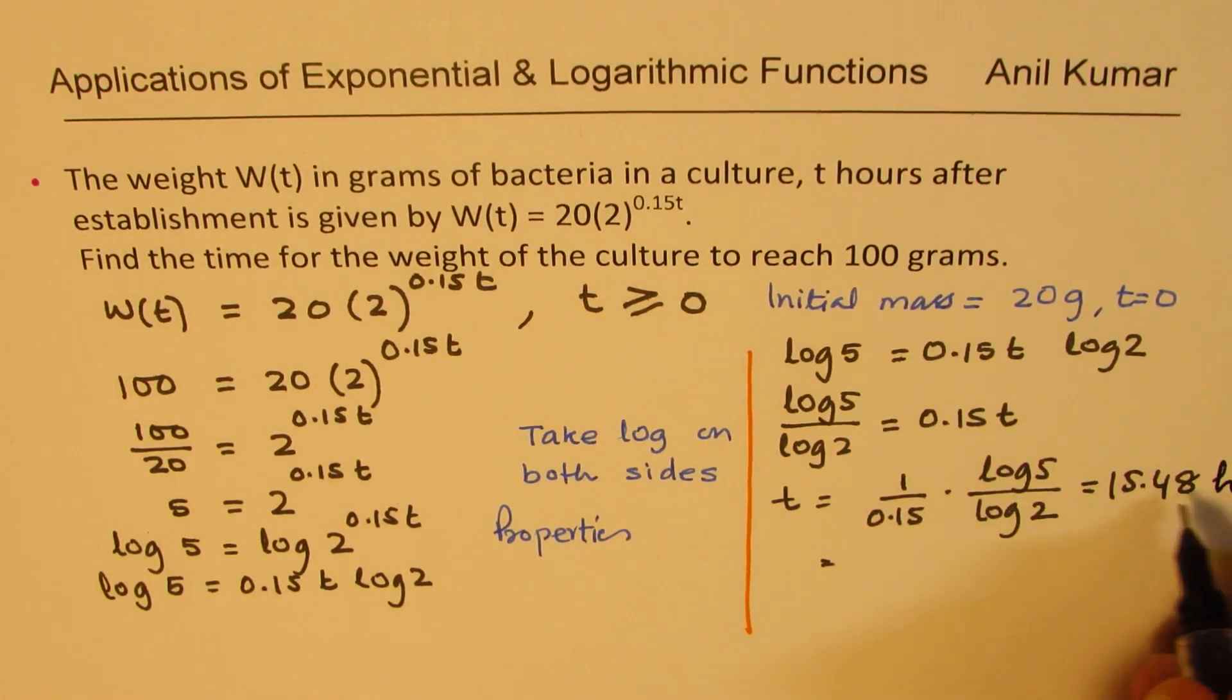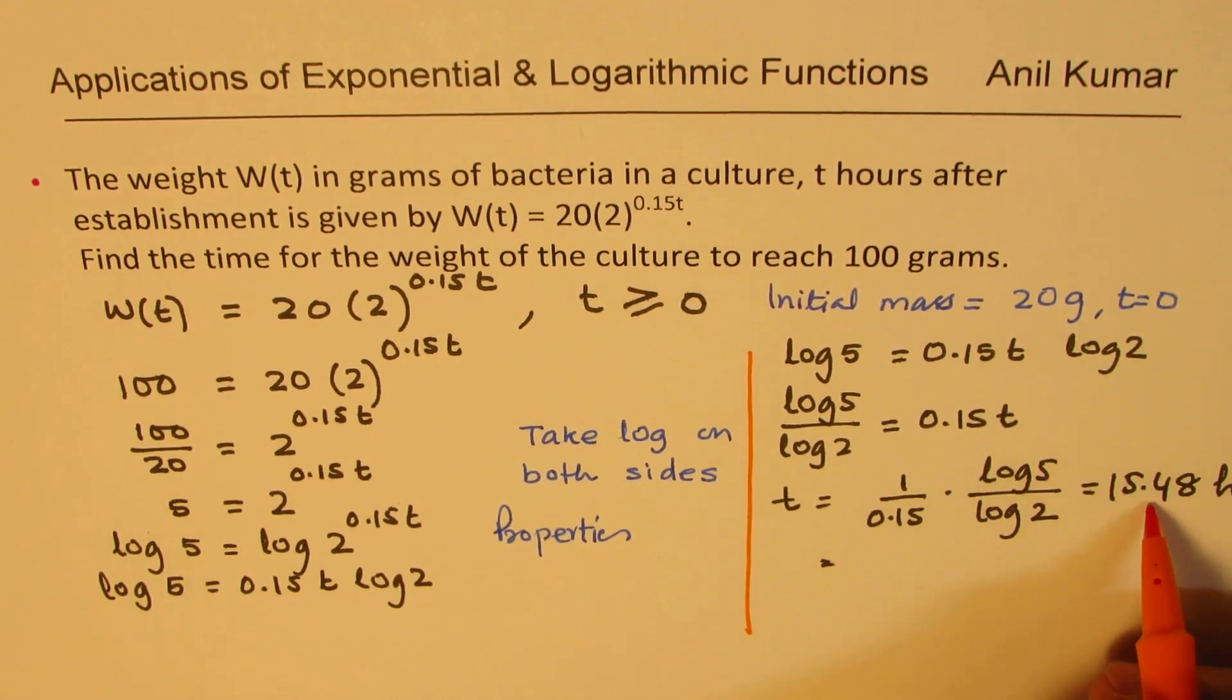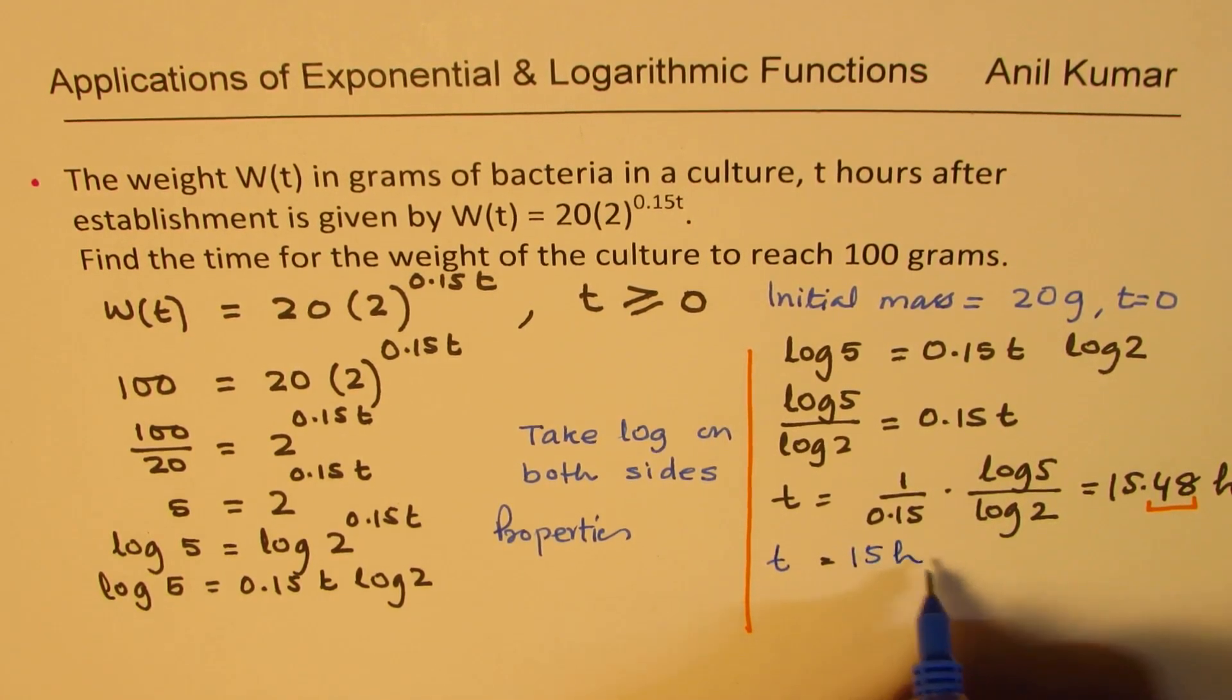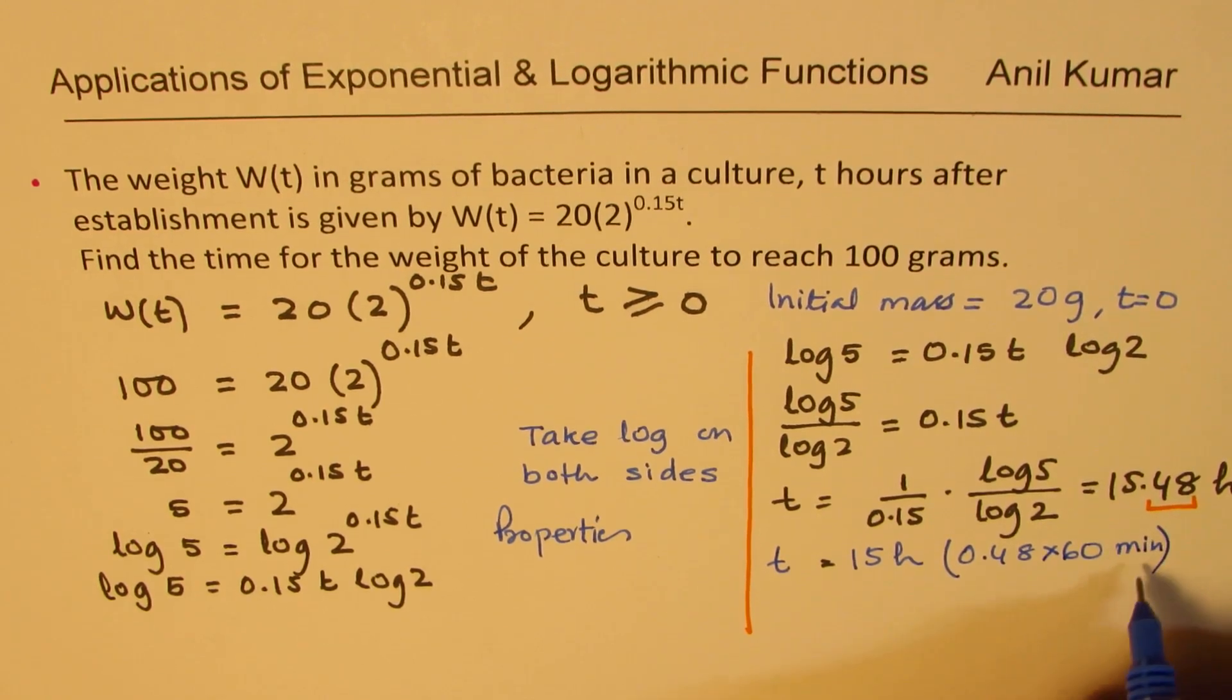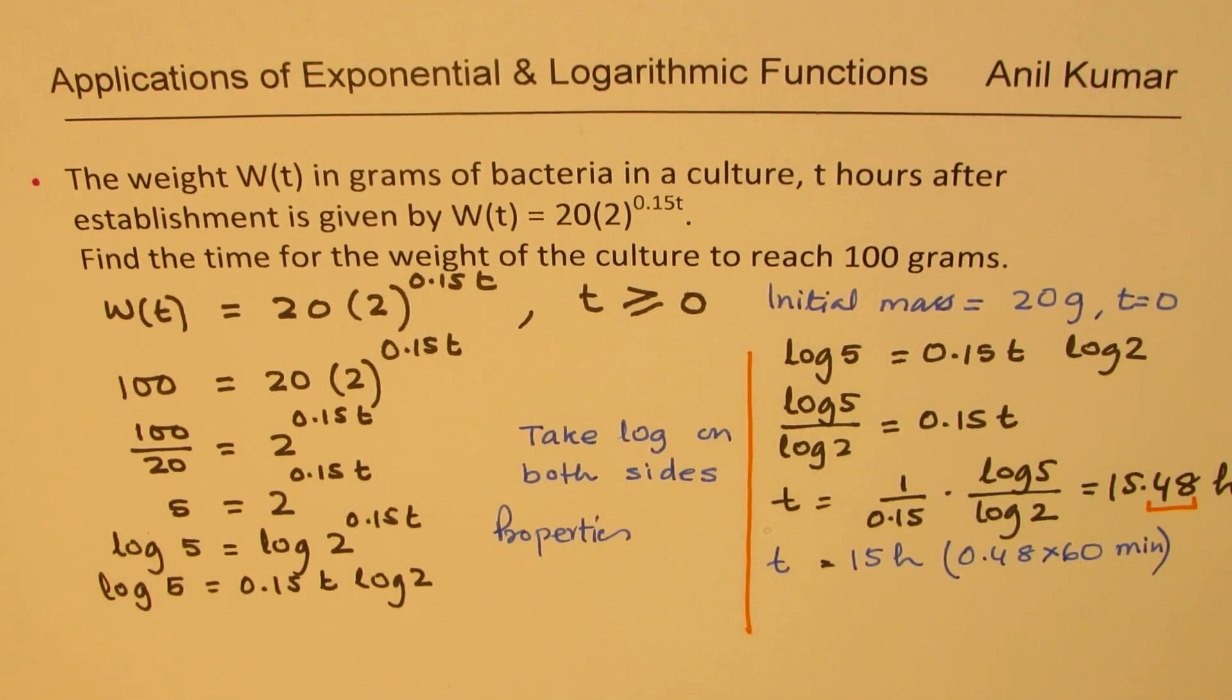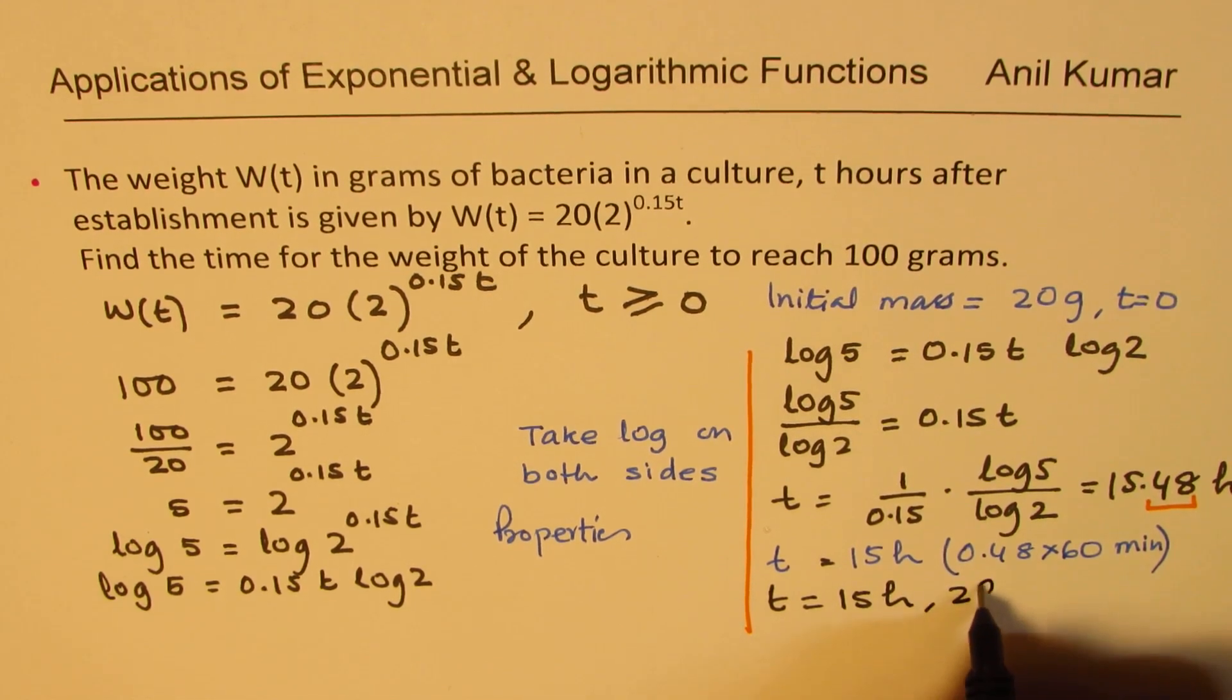Now the time is in hours. 0.48 should be written in minutes. So when we have 0.48 hours, we should write this in minutes. We could write time as 15 hours and 0.48 times 60 minutes. Let me multiply 0.48 by 60, and we get around 29 minutes. So we could write time equals 15 hours and 29 minutes.